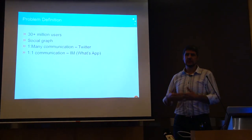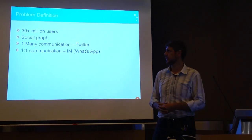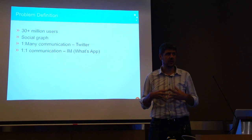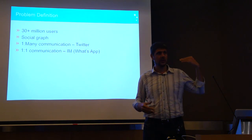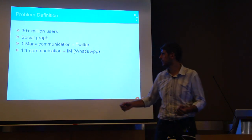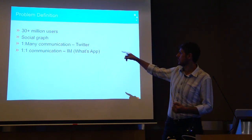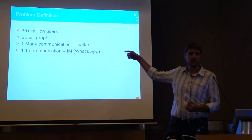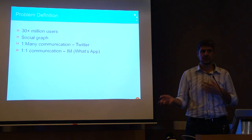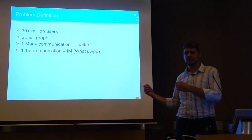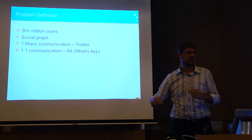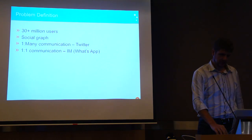This is the justification of why we might actually know something worth sharing. We're 30-plus million users, connected in a social graph, so you have a follow table - who you're following, who's following you. That's your Facebook, your Twitter - everybody has that now. Within that, we send messages one to many, which is Twitter, and we send them one to one.